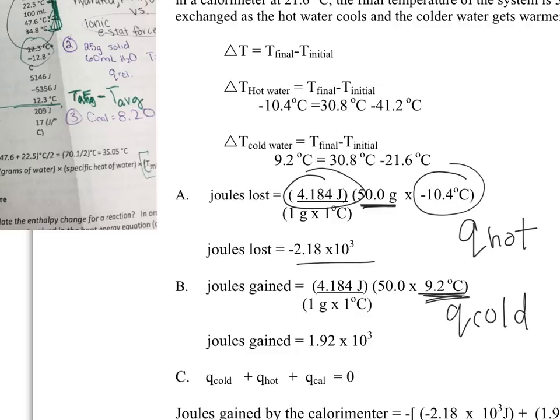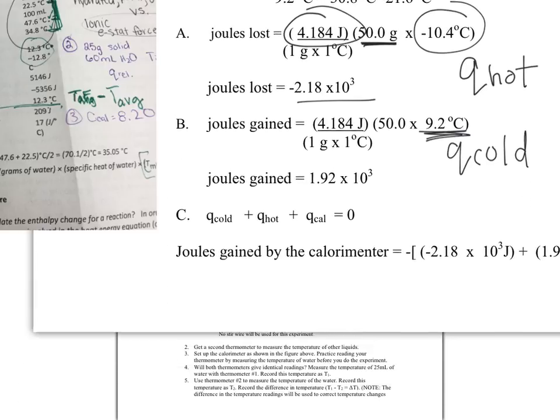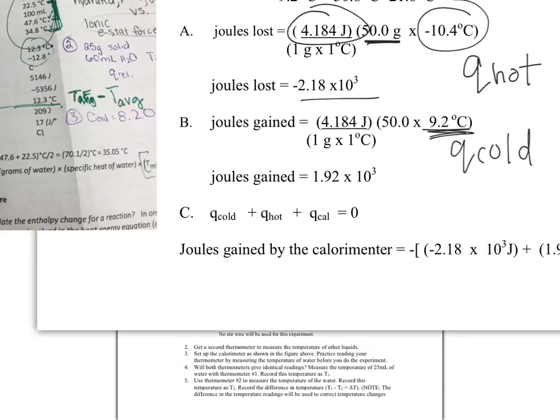So now that you have your Q hot and Q cold, you can use that with this formula to figure out your Q calorimeter. So basically what we're looking at here is that all of the stuff that left the hot water went into the cold water and the calorimeter. So the calorimeter sucked up some of that energy, and that's how you guys are going to do that.